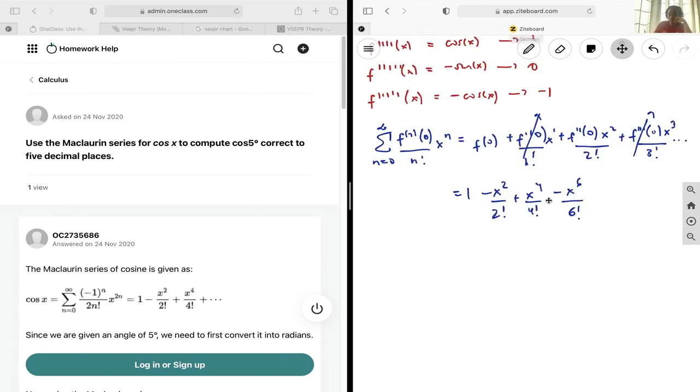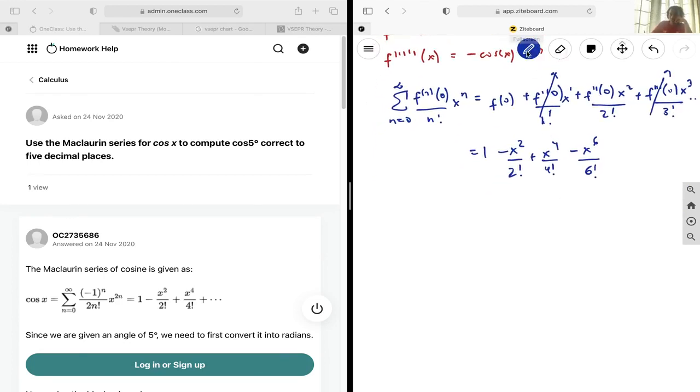And so now if we want to figure out what that would look like in the summation form, because of the alternating pattern of it between positives and negatives, let's throw in a negative one to the power of n. That way when it's zero it will be positive, to the power of one it'll be negative, to the power of two it'll be positive, so on and so forth.